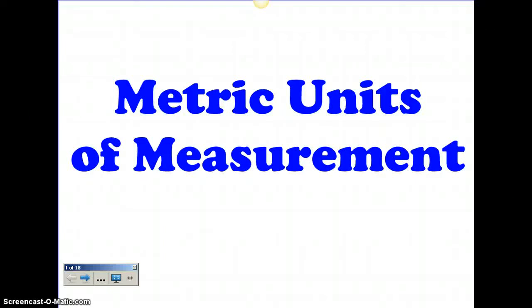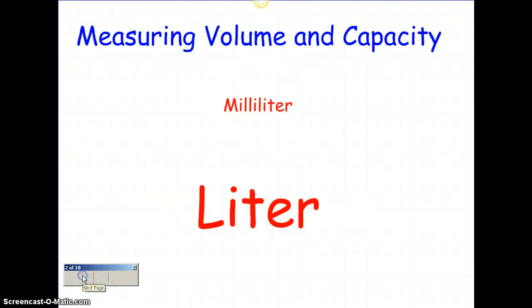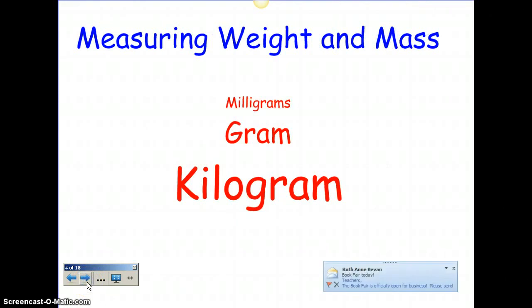Welcome to our fourth grade flipped video on the metric units of measurement. Let's start with what units we use for measuring length or distance. First we have a millimeter, then a centimeter, a decimeter, a meter, and a kilometer. For measuring volume and capacity, you're going to use a milliliter and a liter. For measuring weight and mass, you're going to use a milligram, a gram, and a kilogram.